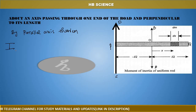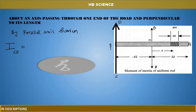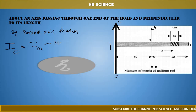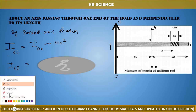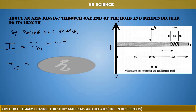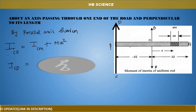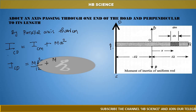By the parallel axis theorem, ICD equals ICM plus M times d squared, where d is the distance between the two parallel axes. The axis AB passes through the center of mass, and the distance between axis AB and axis CD is L by 2. So ICD equals ICM plus M times L by 2 squared.